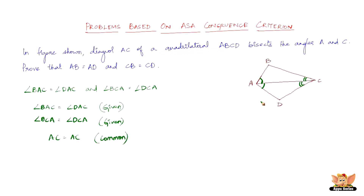And AC equals AC, because it is the common side. So by the ASA criterion — that is, we have two angles equal and one side — which exactly falls under the angle-side-angle congruence criterion.